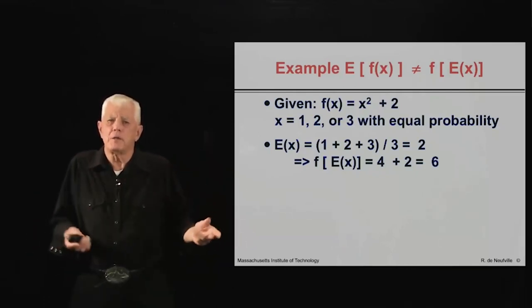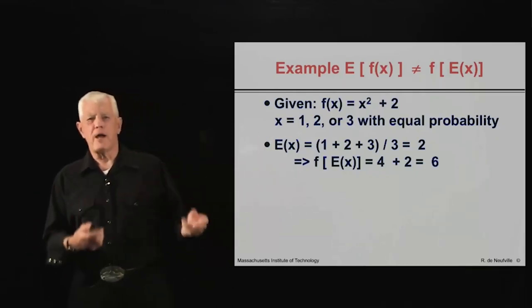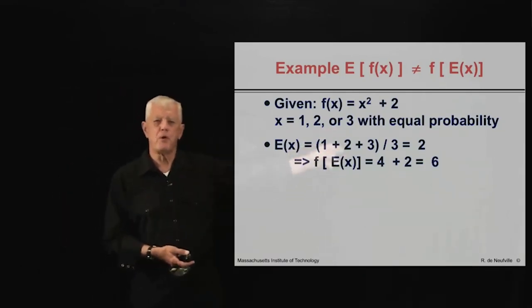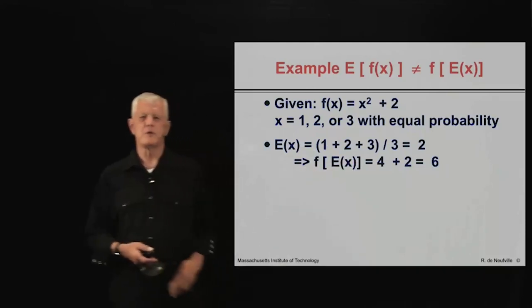So on average, the average value of x is 2. If we evaluate this function using that average value, we get x squared is equal to 4 plus 2, result 6.